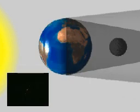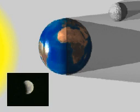Where the full shadow of the earth falls on the moon, a total eclipse of the moon occurs. Where the partial shadow of the Earth falls on the Moon, a partial eclipse of the Moon occurs.